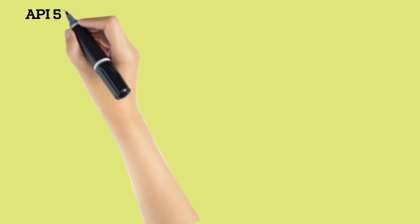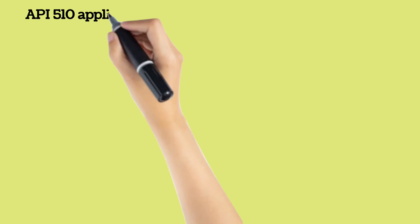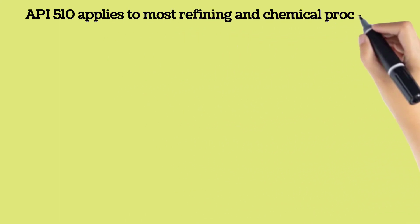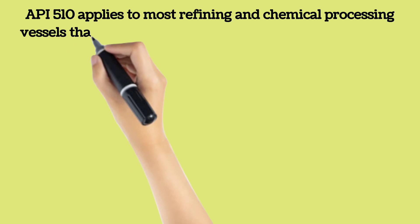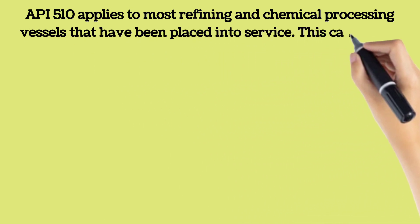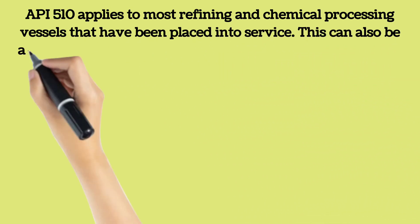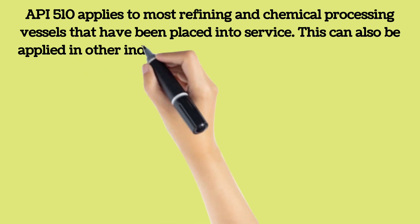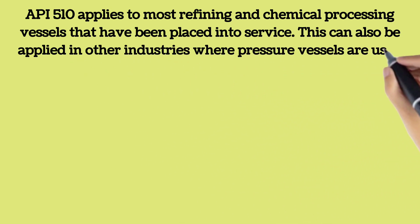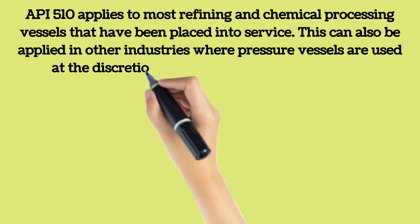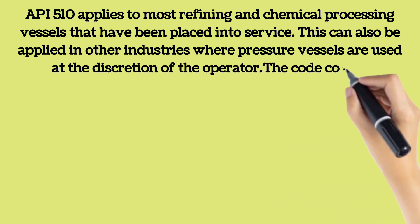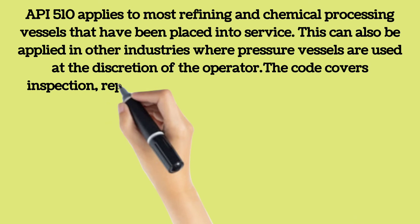API 510 applies to most refining and chemical processing vessels that have been placed into service. However, API 510 can also be applied in other industries where pressure vessels are used, at the discretion of the operator. The code covers inspection, repair, alteration, and rerating activities for pressure vessels and the pressure-relieving devices that protect those vessels.